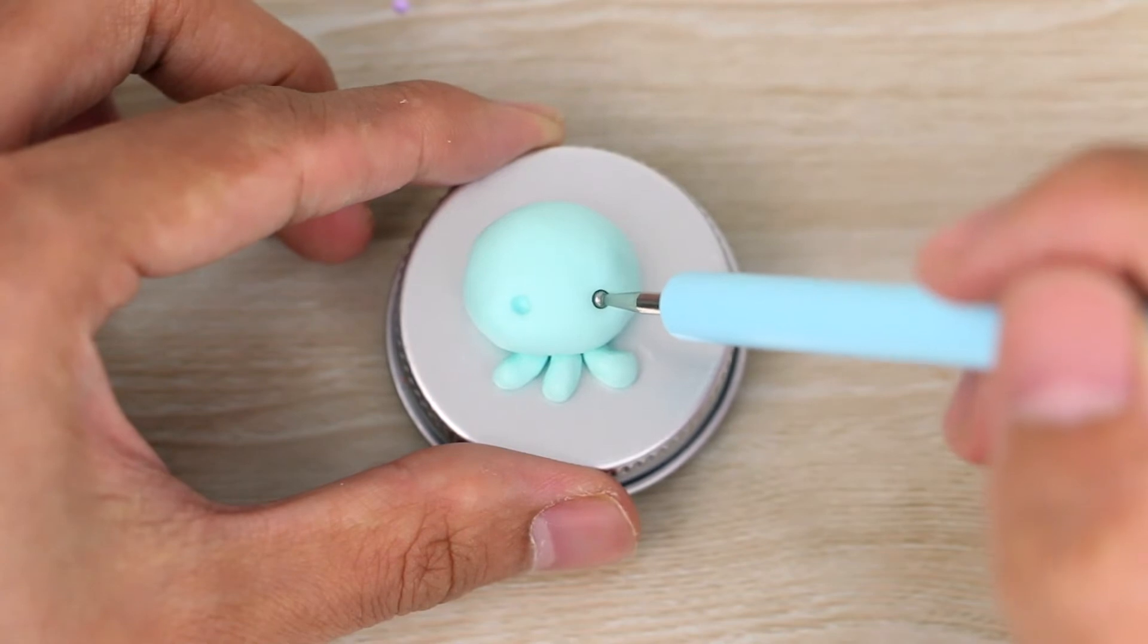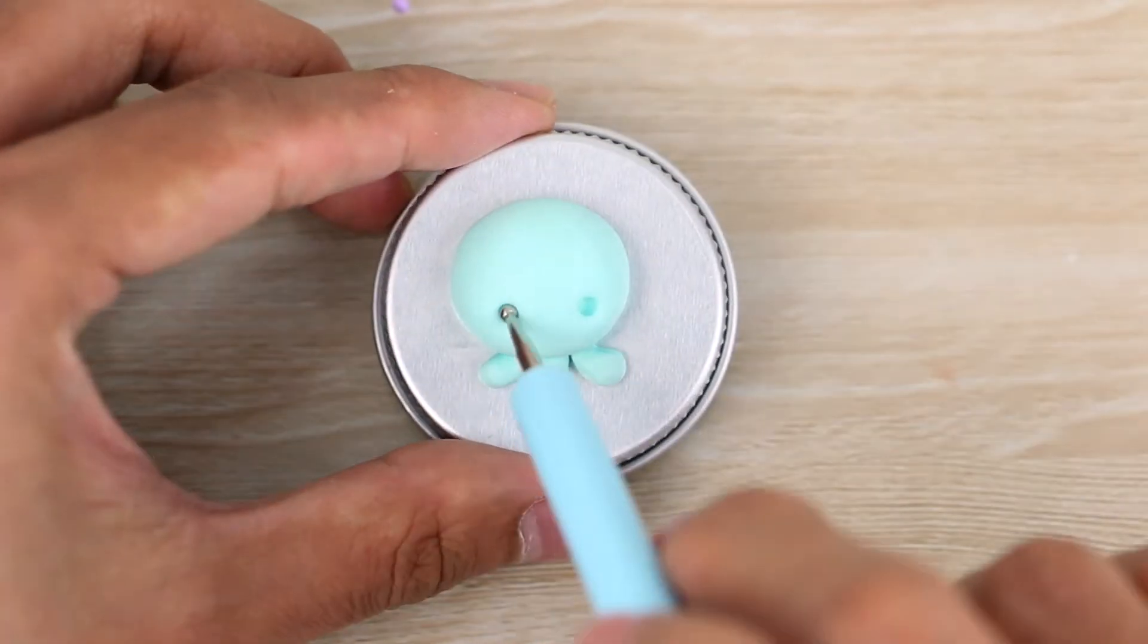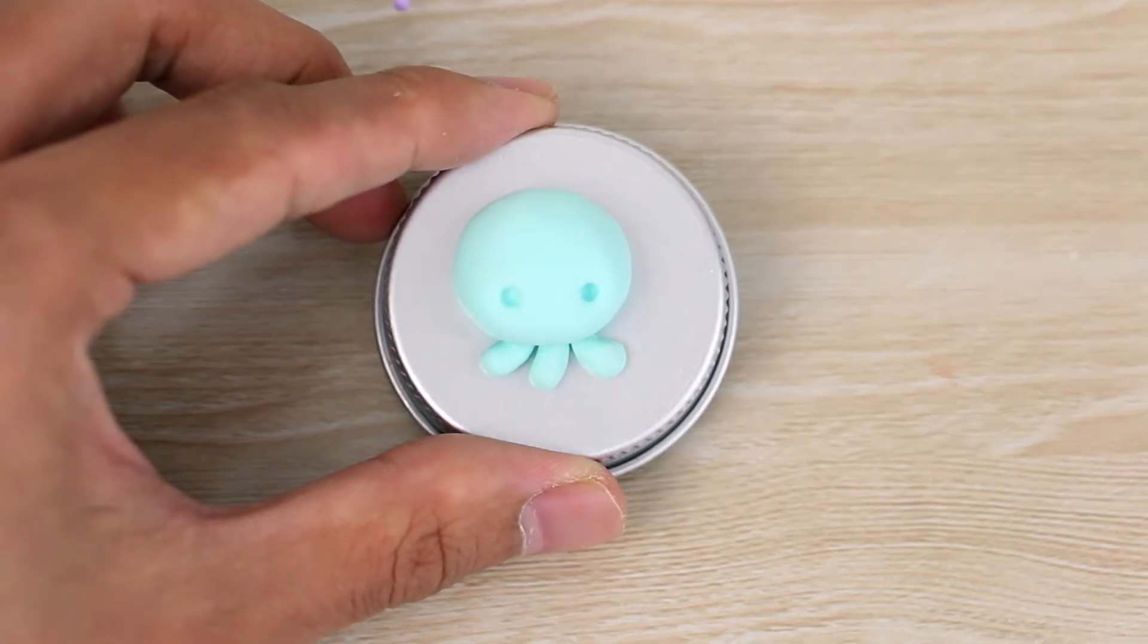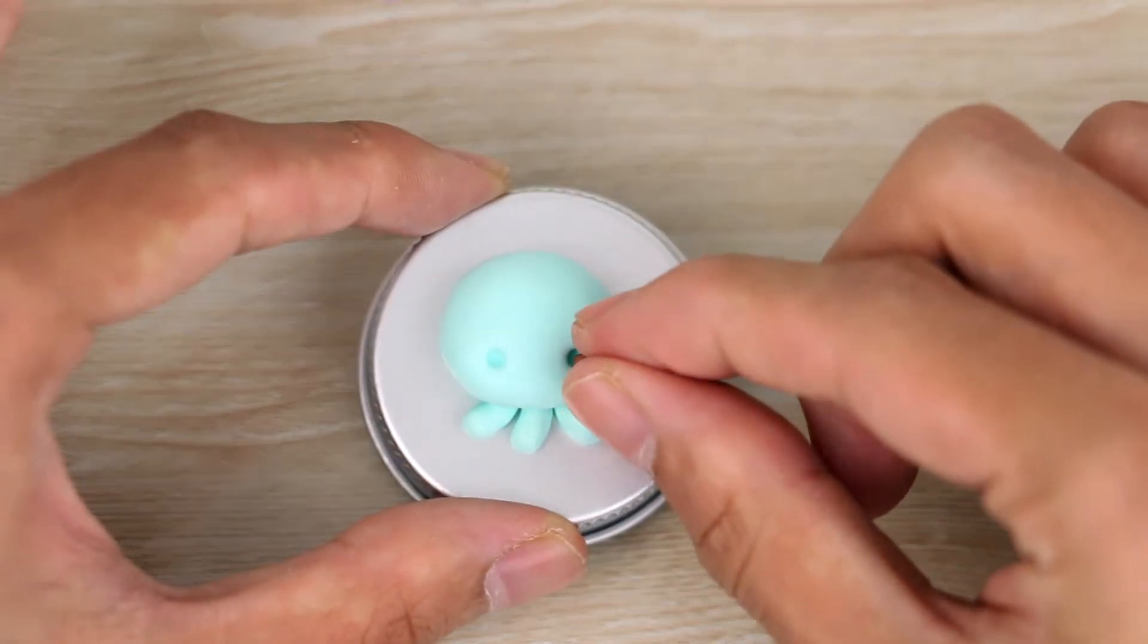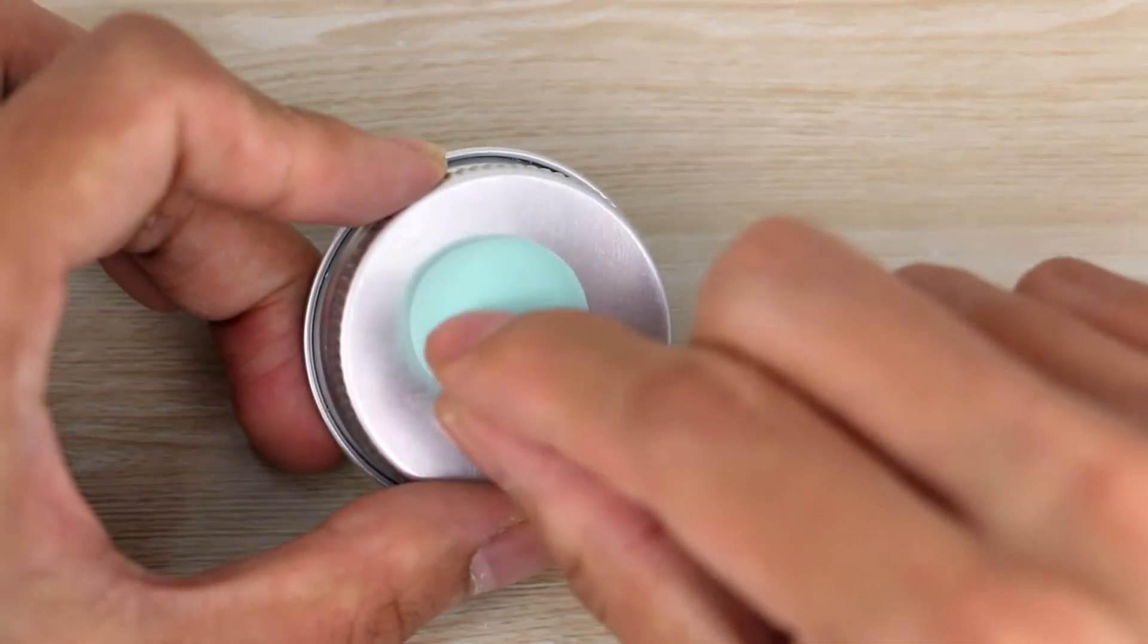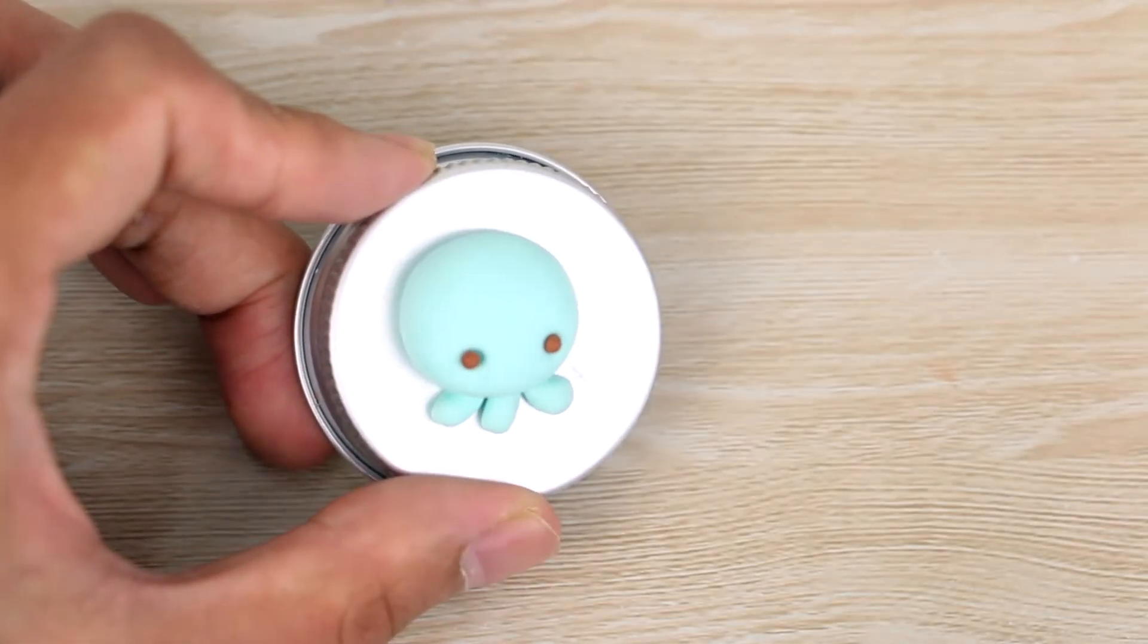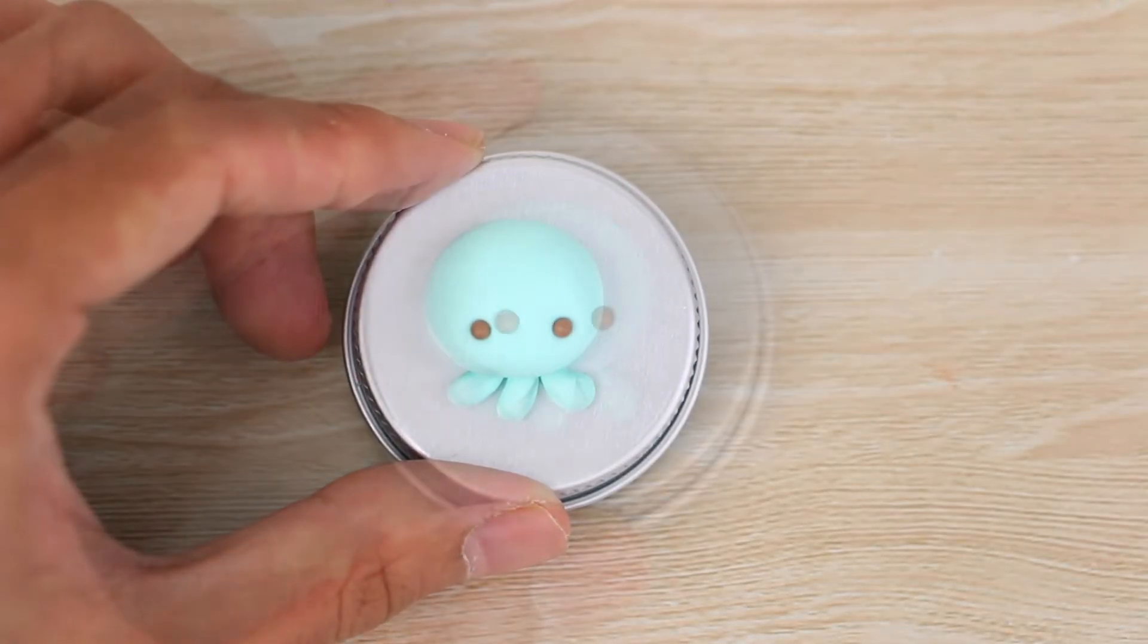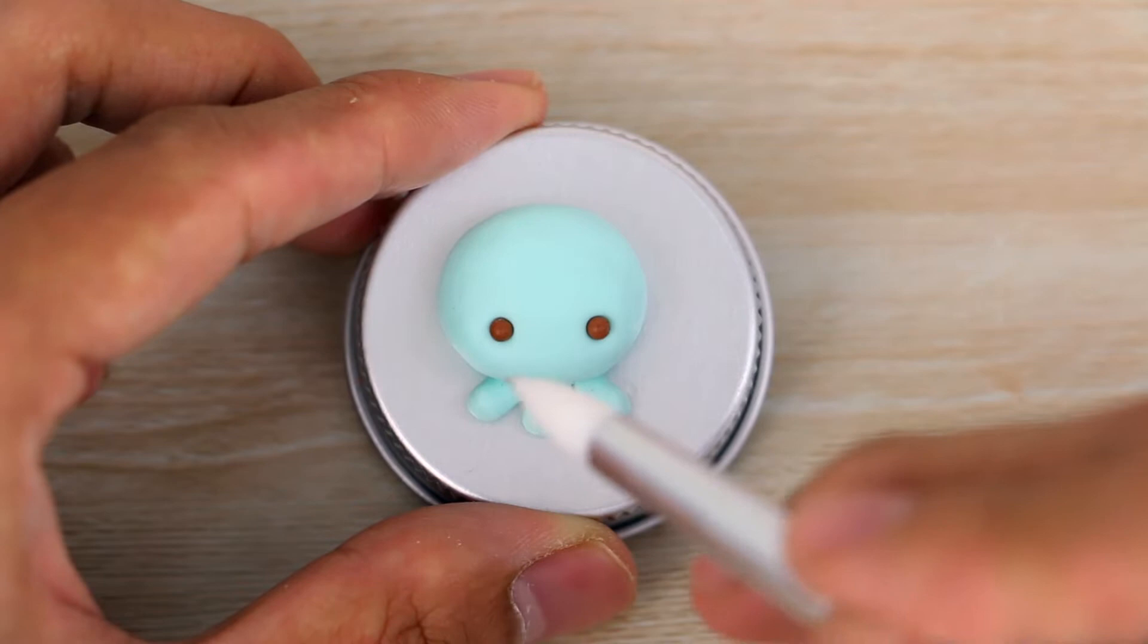Then using a dotting tool, poking some holes for the eyes to go and adding in little balls of brown, and a really small u-shape for the mouth.